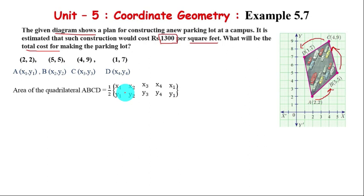The area equals one by two times the determinant: x1,y1; x2,y2; x3,y3; x4,y4; and x1,y1 again. Substituting: one by two times (2,2; 5,5; 4,9; 1,7; 2,2). Now we multiply: first diagonal minus second diagonal.